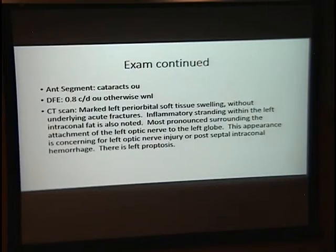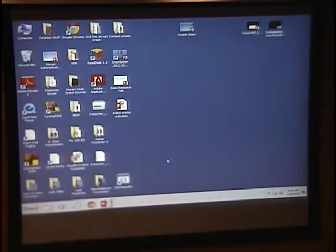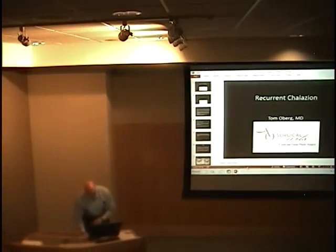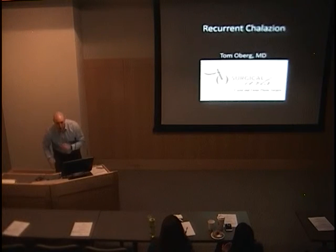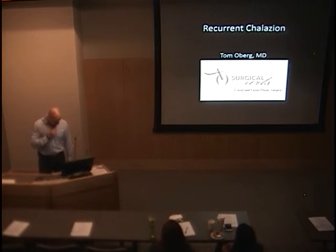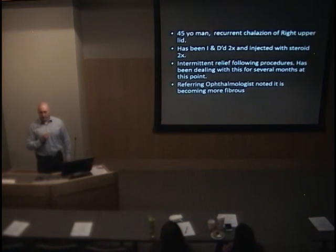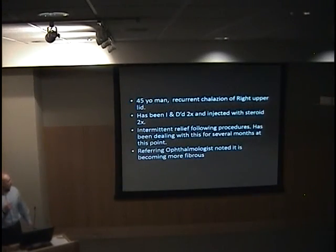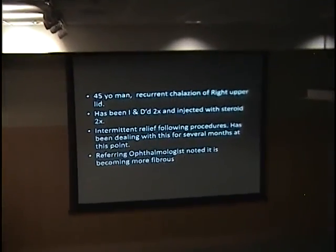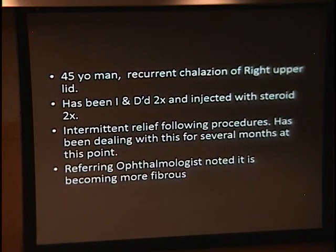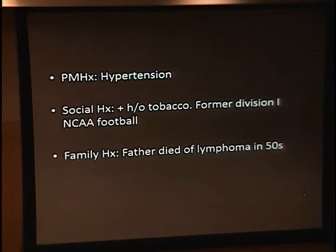Dr. Oberg presents the third case. This is a 45-year-old Caucasian man who had a chalazion in his right upper lid for several months. He had been treated with multiple steroid injections and incision and drainages by his primary ophthalmologist. Each time he did well for a while but the lesion kept returning in roughly the same area. He was referred because the last incision and drainage yielded only fibrous tissue. He had no significant medical or family history. He said things were heading in the right direction but he was tired of it — could we make it go away for good?